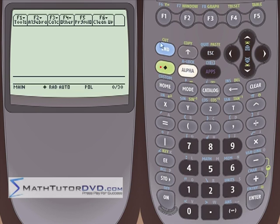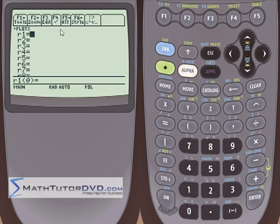Now when we go into the y equals menu, instead of y1 equals something, y2 equals something, y3 equals something, we have a little different representation.